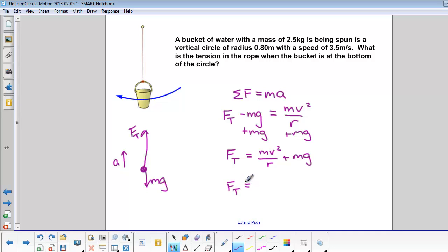Now we can plug in our numbers. Mass is 2.5 kilograms. V is 3.5 meters per second. R is 0.8 meters. M is 2.5 kilograms. And G is 9.8 meters per second squared.